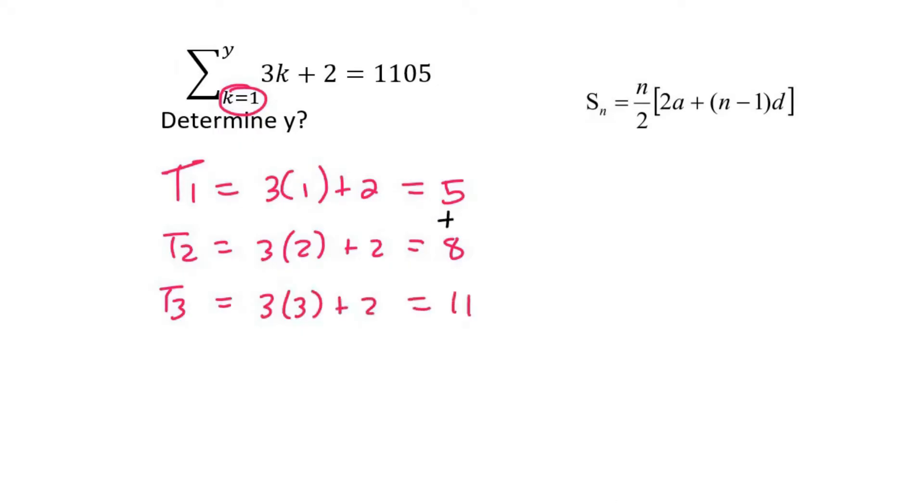So we can see that we have an arithmetic sequence where we are adding 3 each time. And we also know that the sum of all the terms is 1105. So we can use the sum formula of an arithmetic sequence.